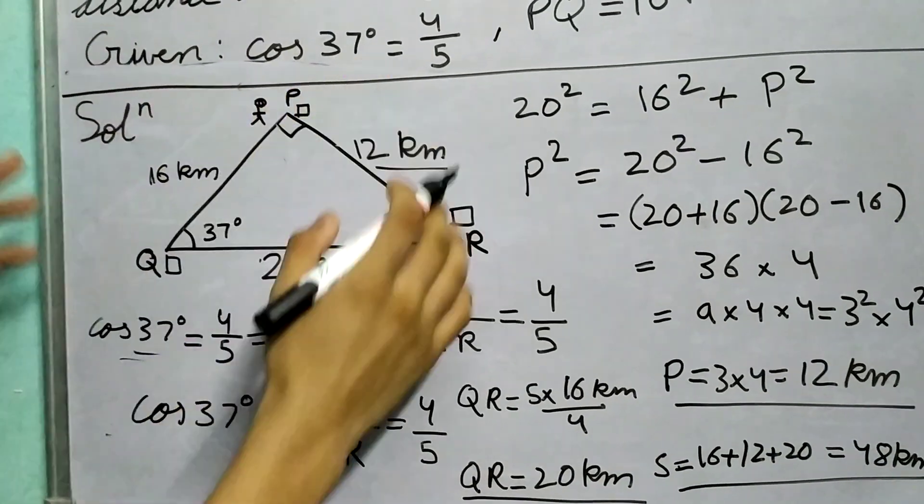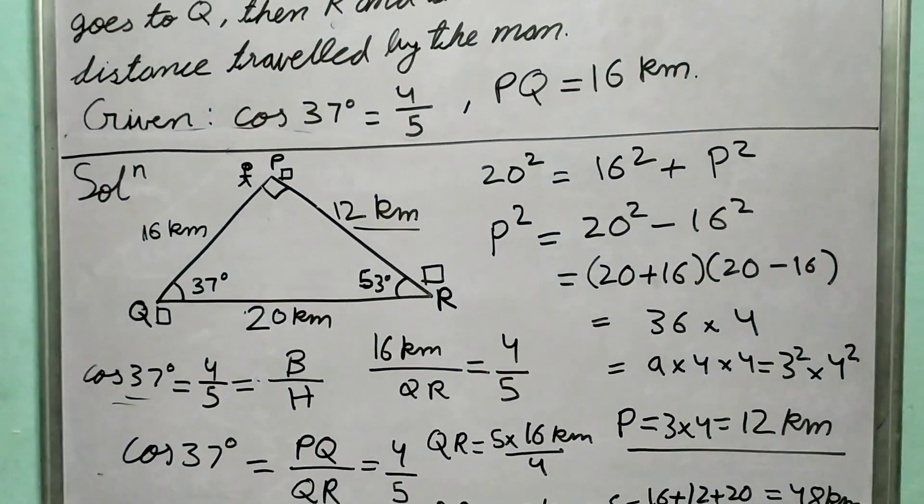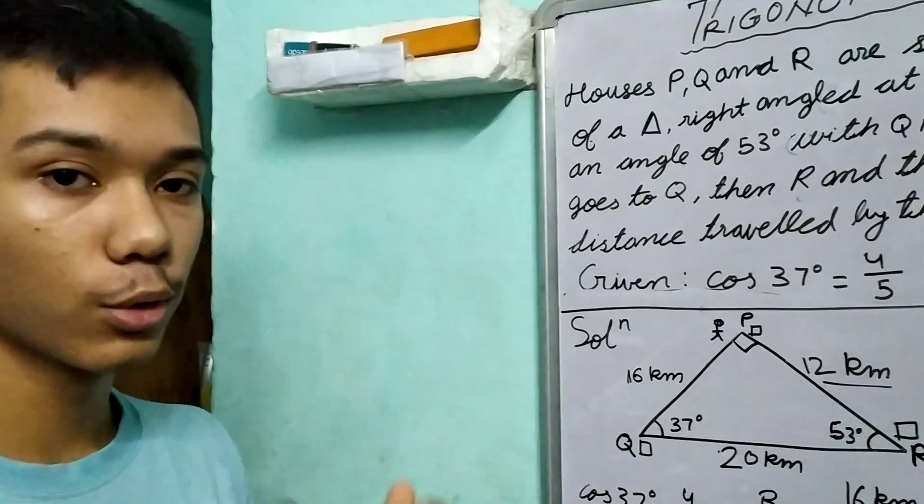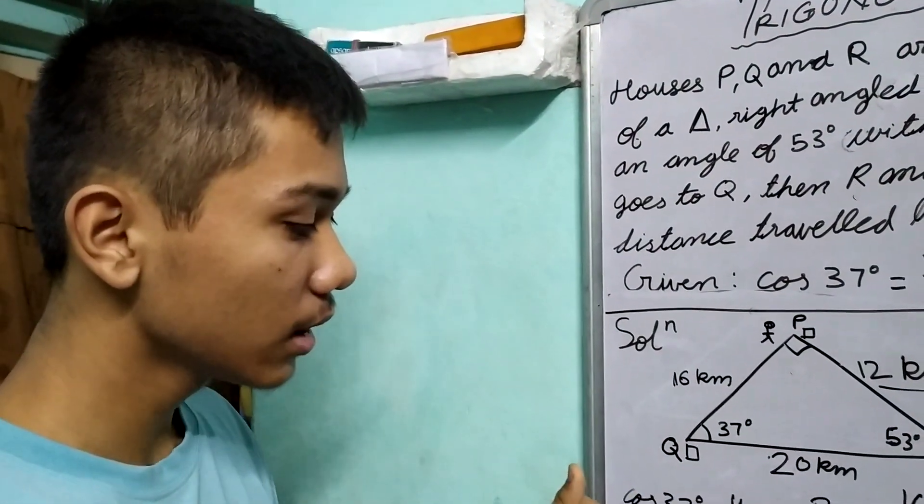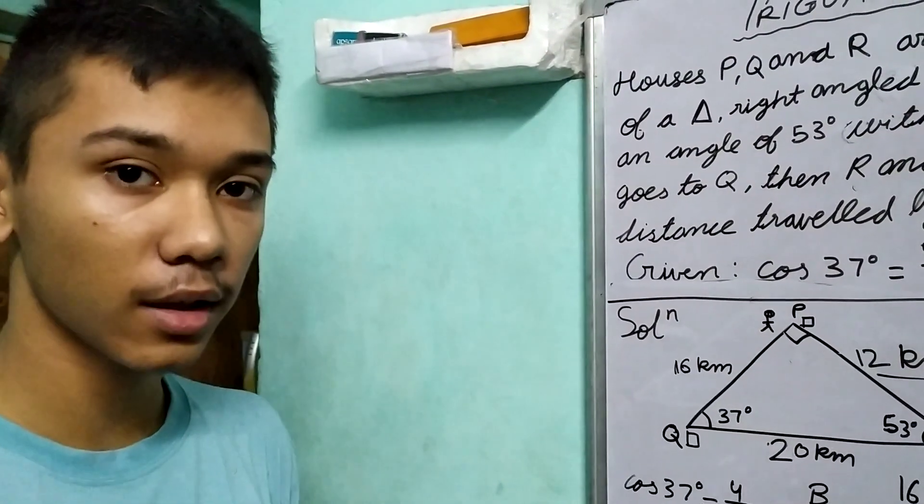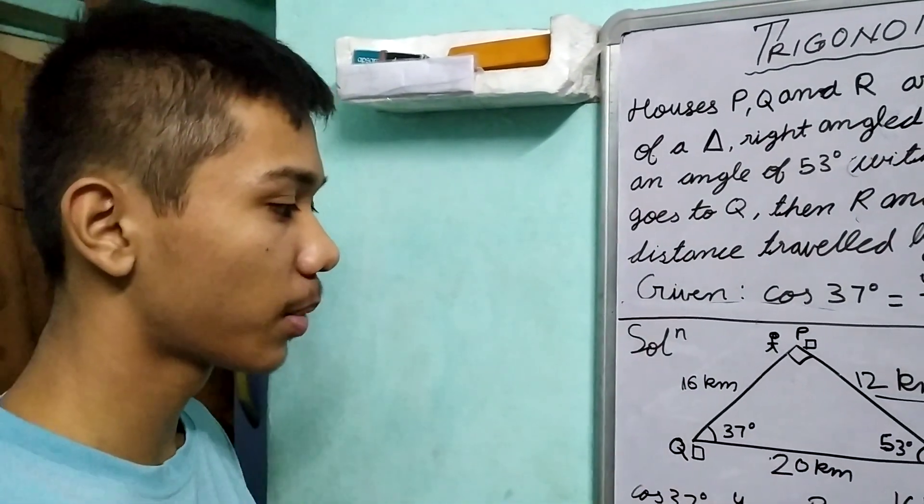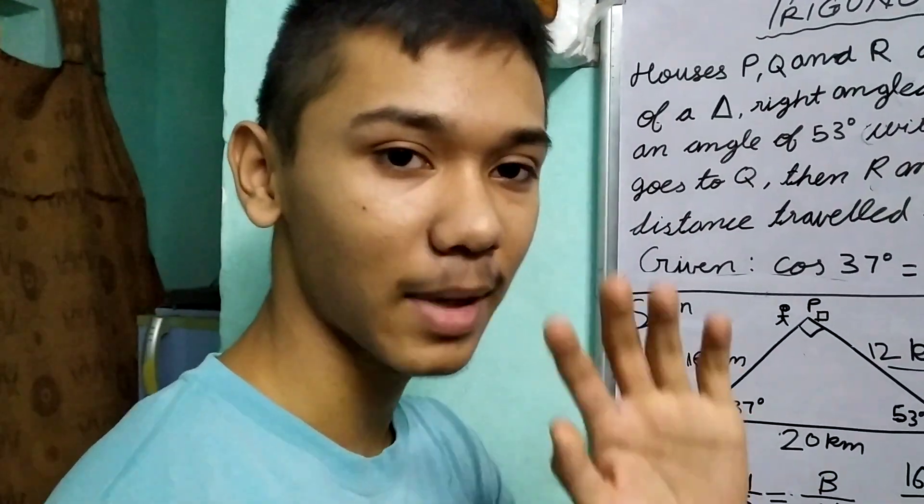You can check this for all the ratios. I hope you liked this question. Now you know how to approach a question where angles are given, a value of a trigonometric ratio is given, and you need to solve for sides or other properties like perimeter. Thanks for watching, bye.